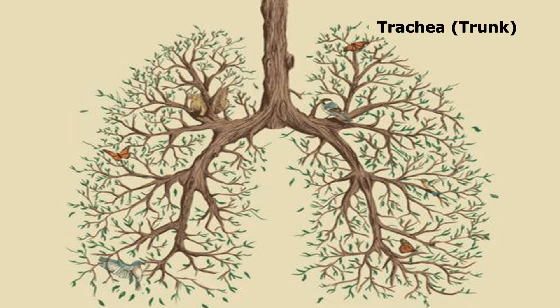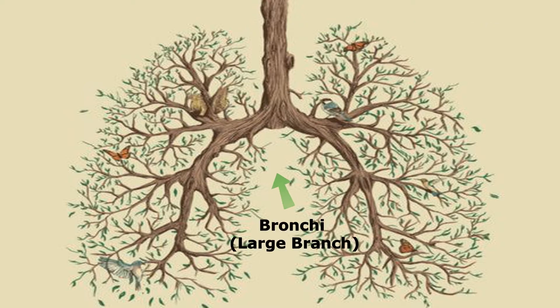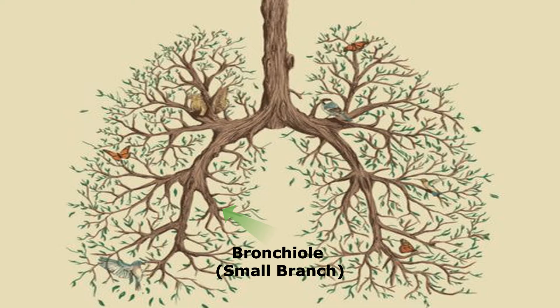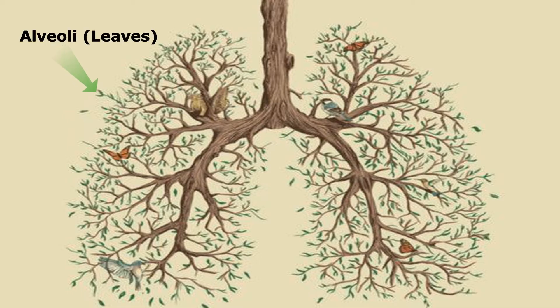One analogy I like to use to remember this is by visualizing an upside-down tree. When we inhale, we take in air through our nose and mouth, which enters the trachea — the trunk, the larger part of the respiratory system. From here, air passes into the bronchi, which are the larger branches. Then air enters the bronchioles, our smaller branches or twigs, and finally at the end of these smaller branches we have the alveoli, which can be related to the leaves on a tree.